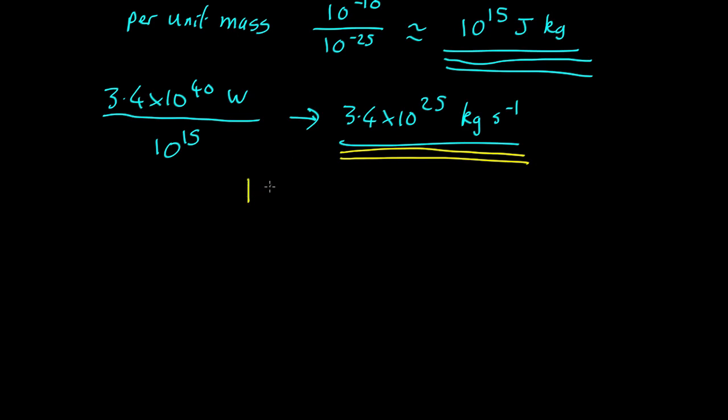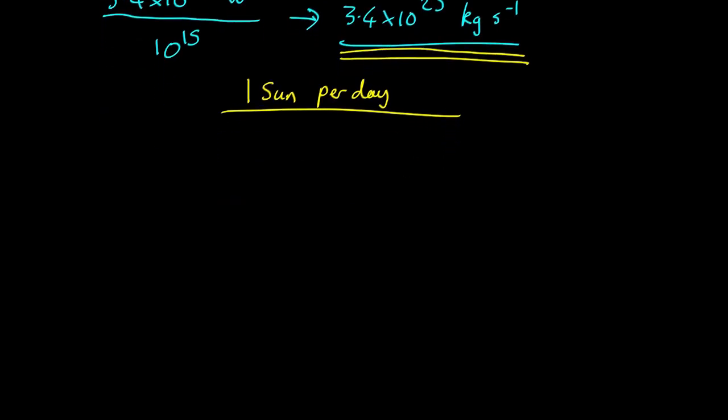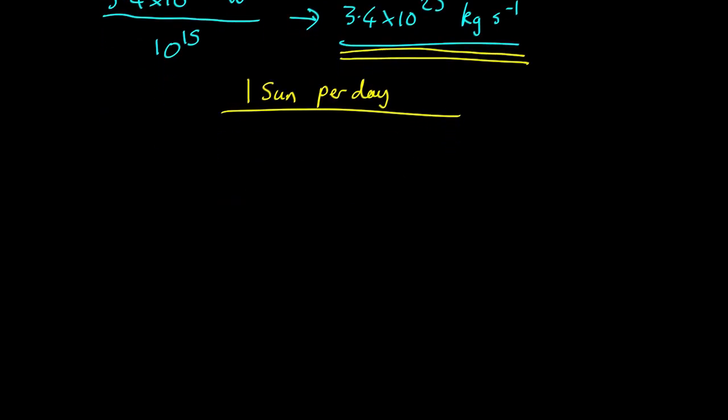So there are problems. But in the best possible situation, you'd need 3.4 by 10 to the 25 kg per second, which is about one sun, one solar mass, per day. So that's a lot of mass. So can we get this to work?